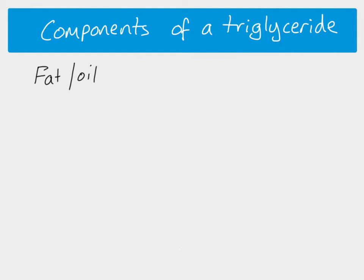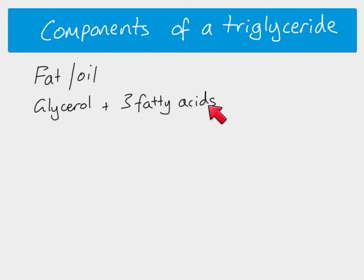There's very little fundamental chemical difference between fats and oils — it's just to do with their melting point. Triglycerides are made of glycerol and three fatty acids, so this is a macromolecule but it is not a polymer, because we have different subunits here — we don't have just one repeating monomer. Glycerol has a formula C3H8O3.